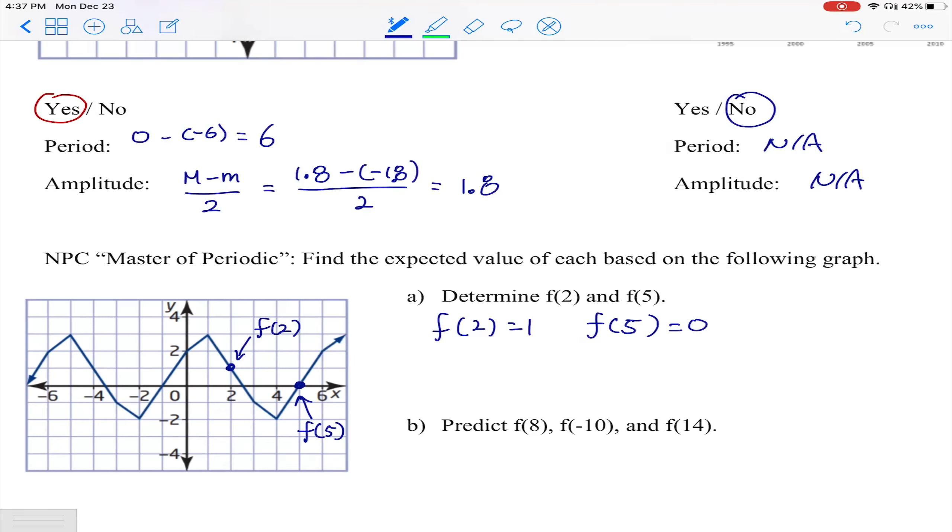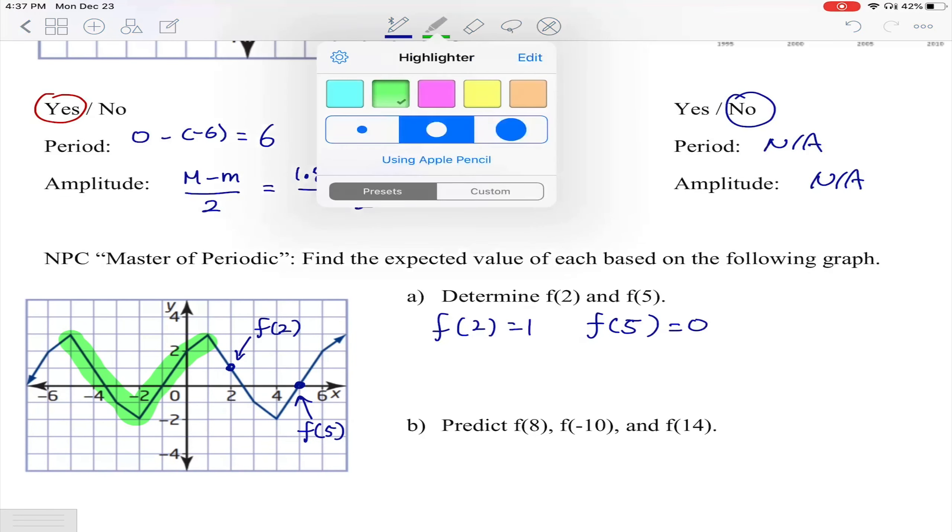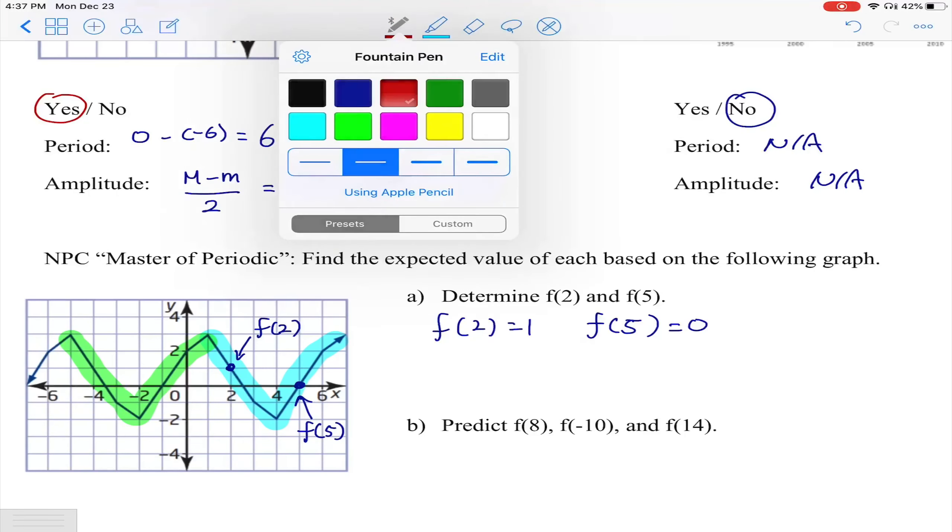Problem is the next one - it says predict f(8), f(-10), and f(14). Let's take a look at this. As you can see, this one is periodic function - you actually see this pattern over there repeats, this V-ish type of shape repeats. What we need to find is the period.